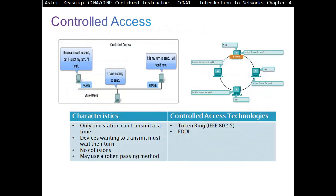Controlled access is better. With controlled access, you can only send if you have something called a token. Only one station can transmit at a time. Devices wanting to transmit must wait their turn — no collision. It uses the token passing method.